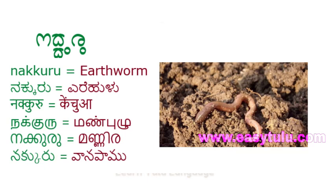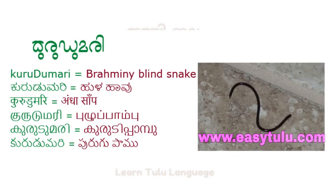Nakkuru means Earthworm. Kudumari means Brahminy Blind Snake.